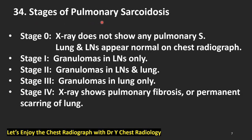Stages of pulmonary sarcoidosis: Stage 0 — X-ray shows no pulmonary sarcoidosis, lungs and lymph nodes appear normal. Stage 1 — granulomas in lymph nodes only. Stage 2 — granulomas in lymph nodes and lungs. Stage 3 — granulomas in lungs only. Stage 4 — X-ray shows pulmonary fibrosis or permanent scarring of the lung. Usually, patients are most commonly in stage 1 and 2 — lymph nodes plus or minus lung.